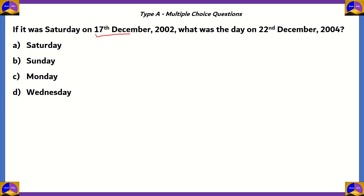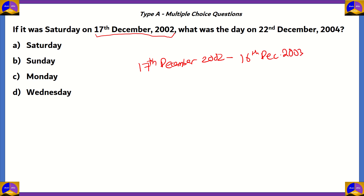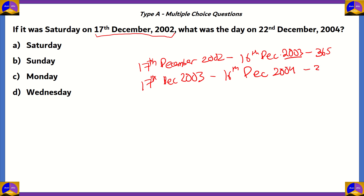Let's look at the initial date: 17th December 2002. A year can have either 365 or 366 days. From 17th December 2002 to 16th December 2003, there will be 365 days, since 2003 is not a leap year. However, from 17th December 2003 to 16th December 2004, there will be 366 days, because 2004 is a leap year and we'll have an extra day in February.